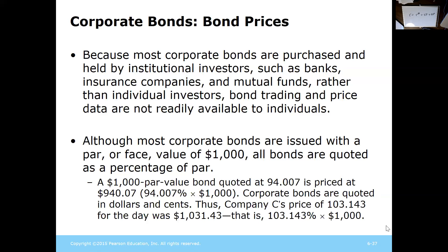If a bond is quoted at 110, you take 110% times the face value to get the actual market price. With a price quoted at 103.143 on a $1,000 unit, you would calculate $1,000 times 103.143% to get the bond price.